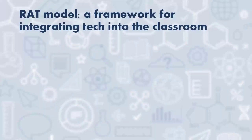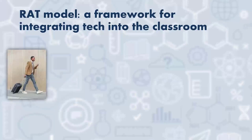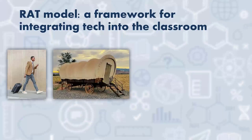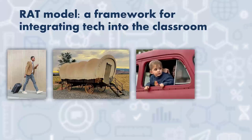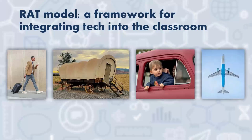Let's look at this RAT model framework for integrating tech into the classroom. One way to understand how you can graduate from one level to the next is to think about transportation. Walking is like the original lesson. Then we developed the covered wagon to replace walking. Then we have cars — faster and easier than the covered wagon. And then we have airplanes, technology used to completely transform transportation in a way that was previously inconceivable.